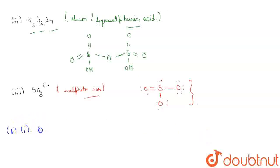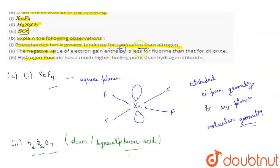So the property catenation depends upon the strength of the element. Strength of the element. And since P-P bond strength, P-P bond strength is much more than the N-N bond strength. That's why phosphorus has greater tendency for catenation than nitrogen.